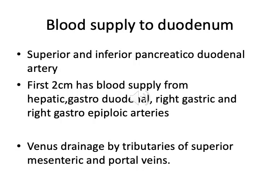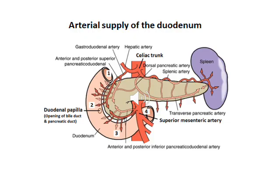The duodenum is supplied mainly by the superior and inferior pancreaticoduodenal arteries. The first 2 cm of the duodenum has blood supply from the hepatic, gastroduodenal, right gastric, and right gastroepiploic arteries, which are branches of the celiac trunk. The venous drainage of the duodenum is by tributaries of the superior mesenteric and portal veins. In this picture you can see the blood supply of the duodenum.